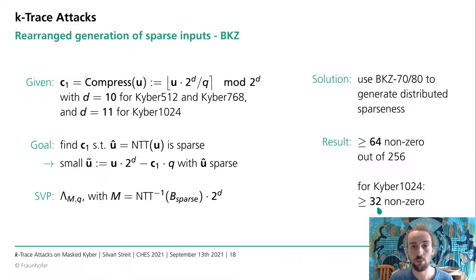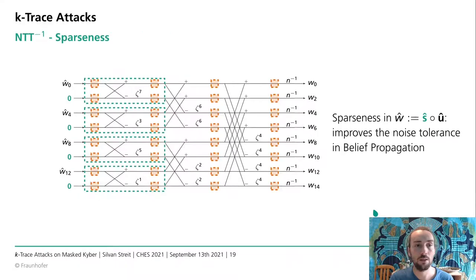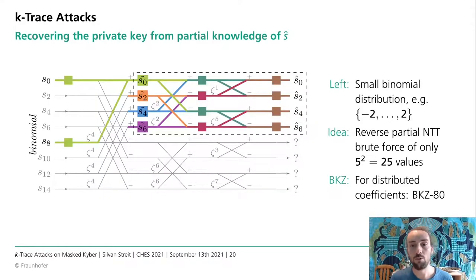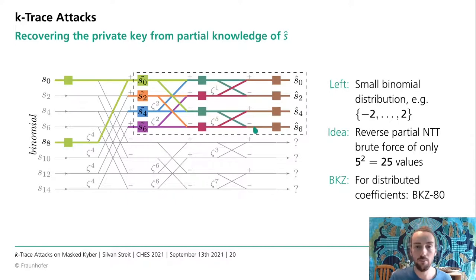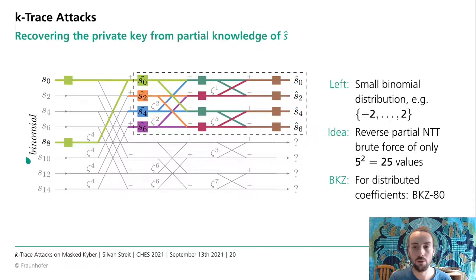Now we have to recover the original S from this sparse knowledge of our S-hat coefficients. We can use the structure of the NTT: if we know all coefficients in the top half and have no knowledge of the bottom half, we can still recover them by computing back the last few layers of the NTT — since top and bottom never mix again — and then do a small brute force of the single coefficient, which only depends on two input variables sampled from a small binomial distribution. The binomial is between minus 2 and 2, giving five different values, so only 25 different value pairs to brute force for each coefficient.